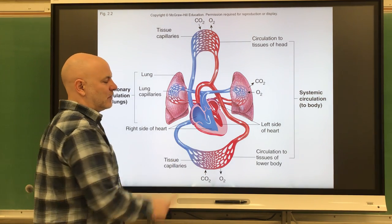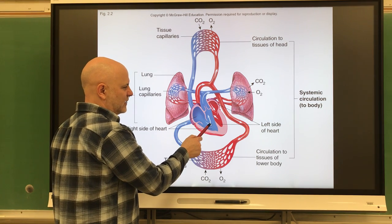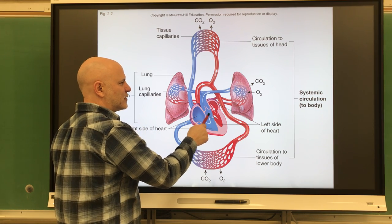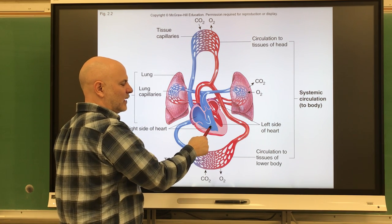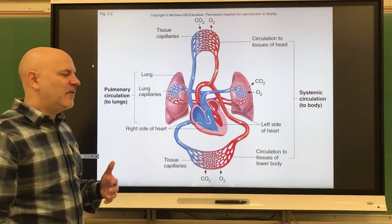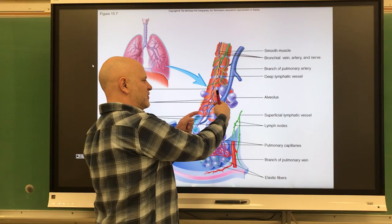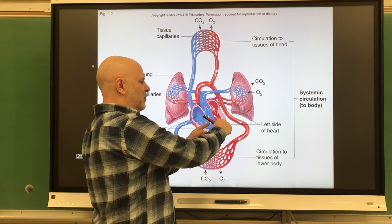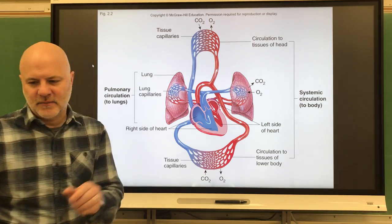Blood then moves from those capillaries to veins to the superior and inferior vena cava, and we start the whole process over again. So the full pathway is: right atrium → right ventricle → lungs → left atrium → left ventricle → body → back to the right atrium. When blood is entering the right atrium, it's also entering the left atrium at the same time, being pushed into the ventricles simultaneously, and pushed out of the heart at the same time.